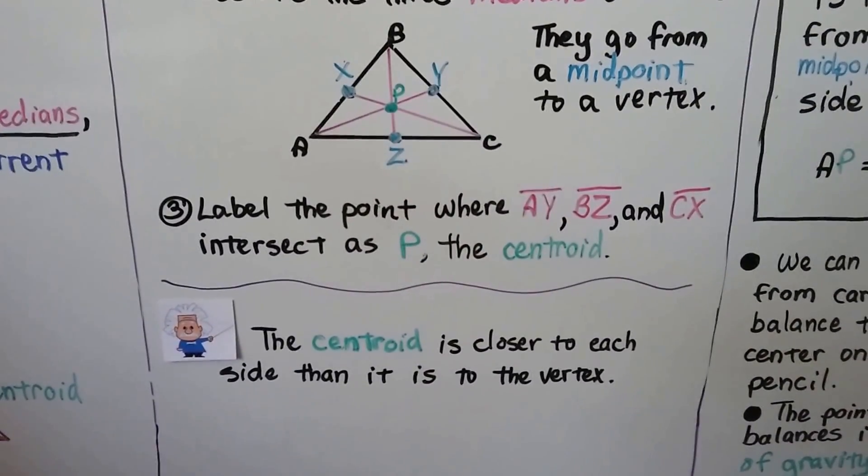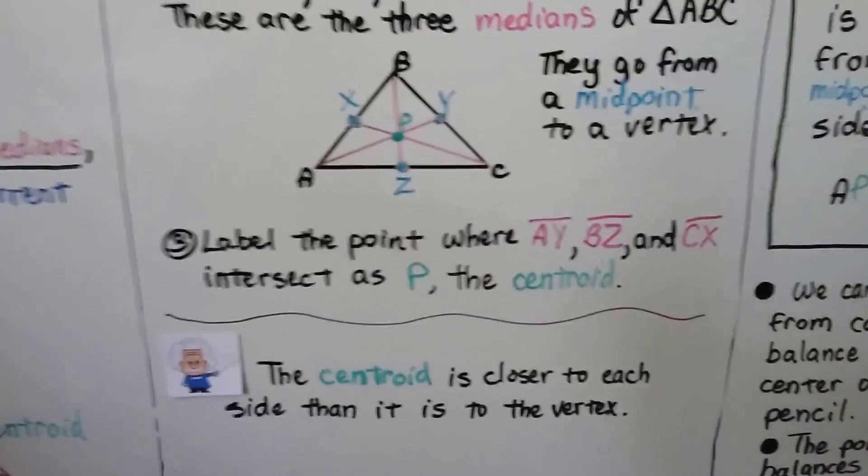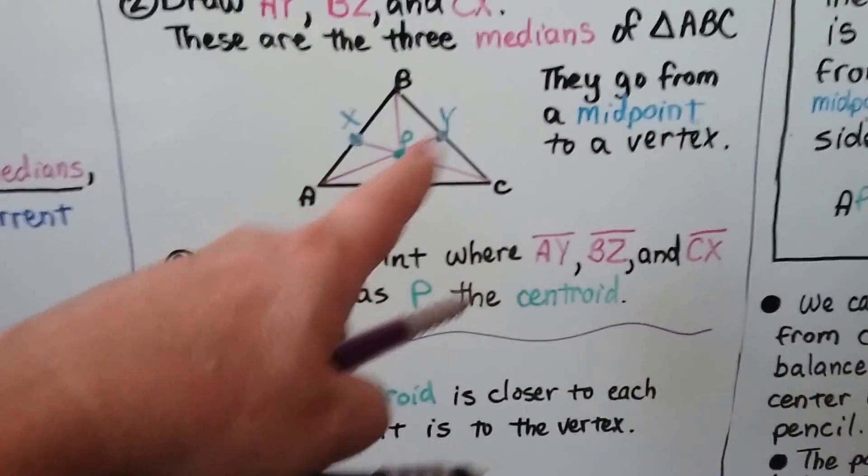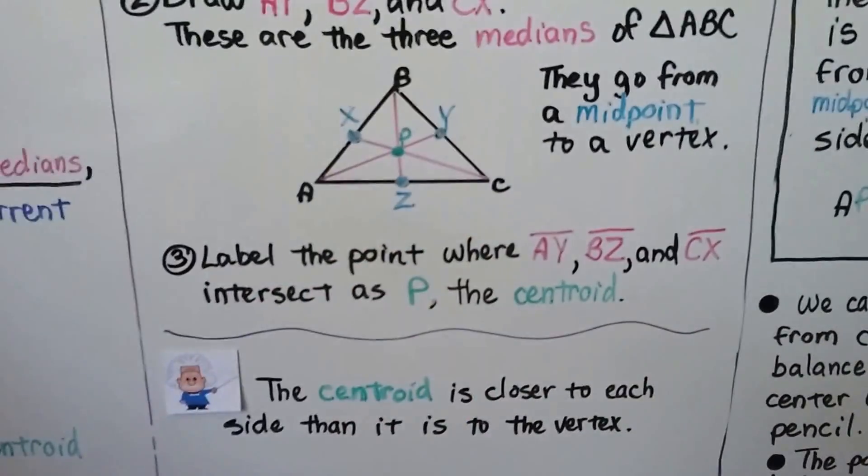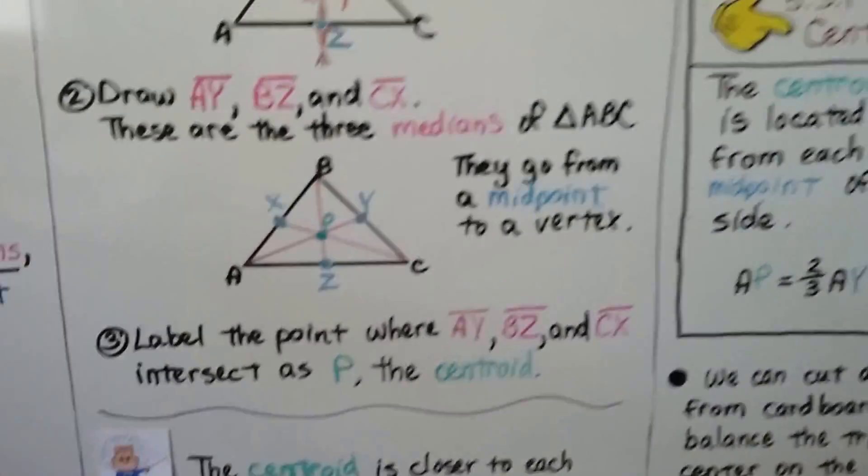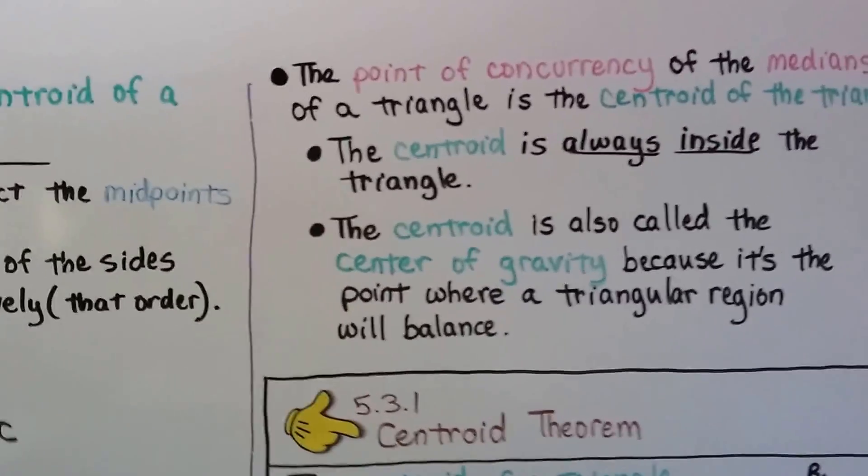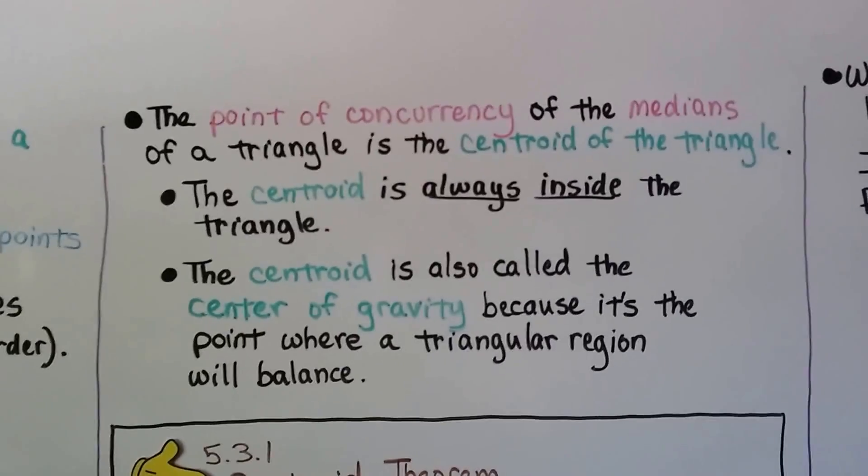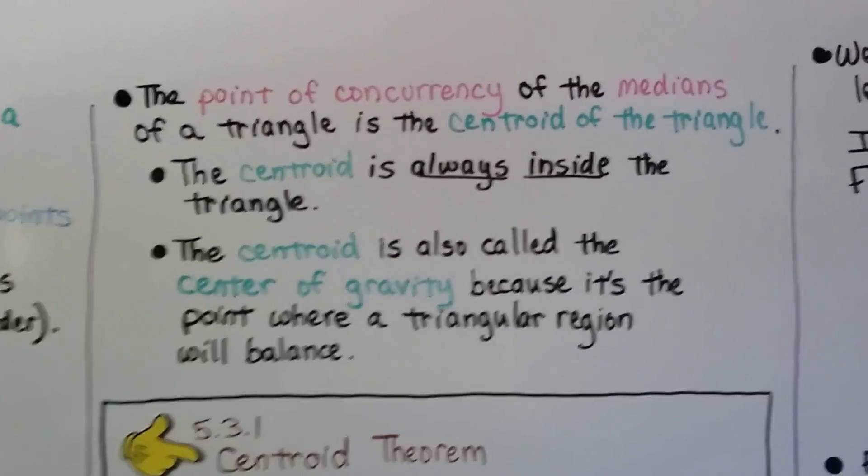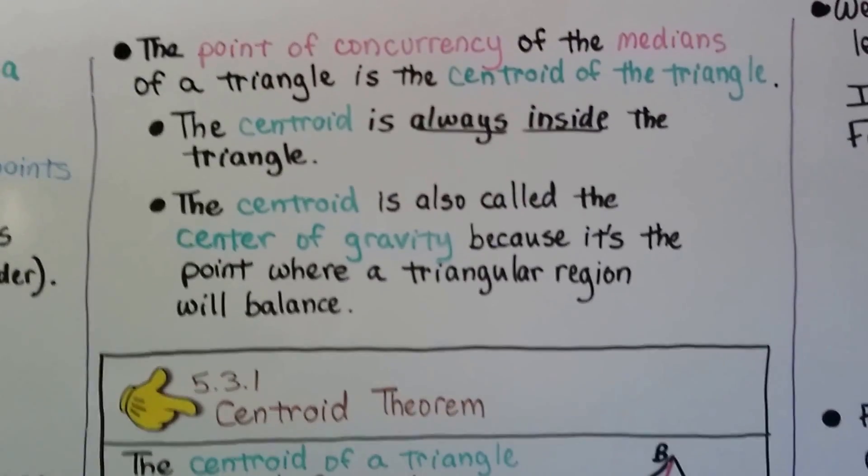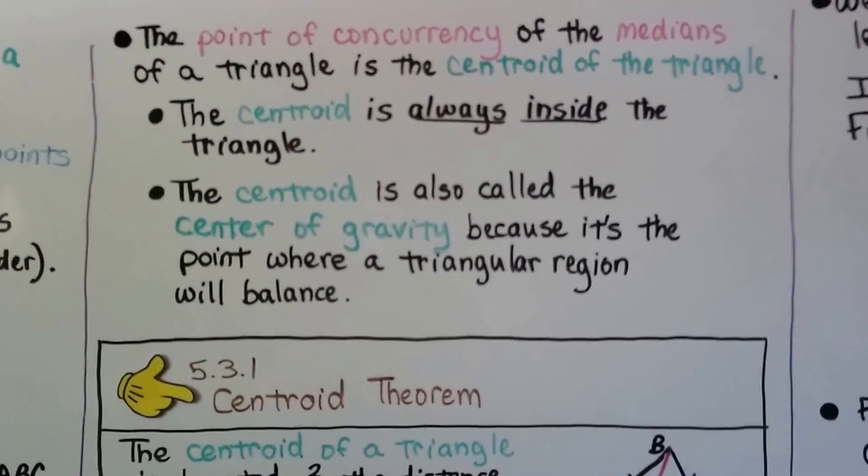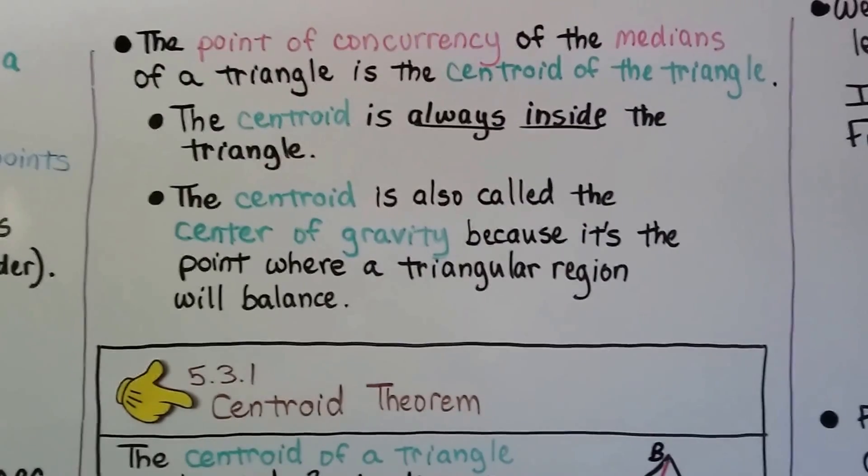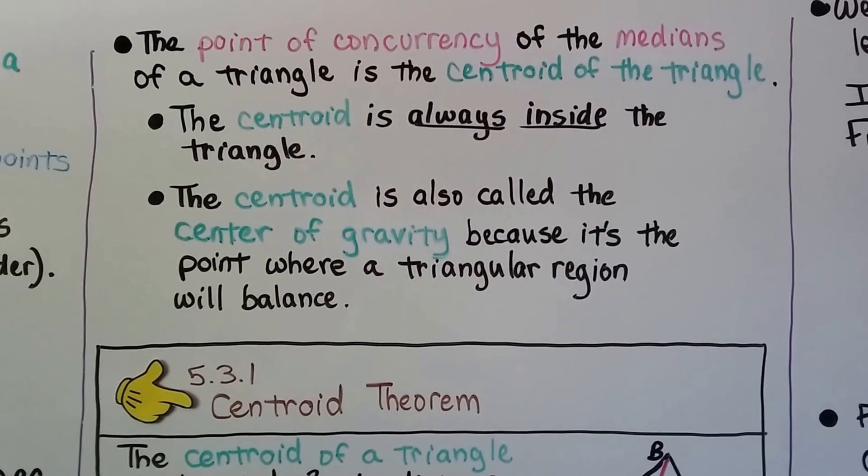And the centroid is closer to each side than it is to the vertex. If you look, P is closer to X, Y, and Z than it is to ABC, isn't it? And the point of concurrency, that's where they meet, the point of concurrency of the medians of a triangle is the centroid of the triangle. And the centroid is always inside the triangle. And it's also called the center of gravity because it's the point where a triangular region will balance.